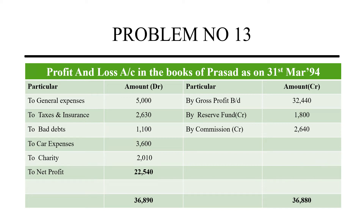And next one is charity — here I have mentioned it as $2,010. On the credit side, there is a gross profit from the trading account. And reserve fund — it's a very big topic, but in this question, reserve fund reflects both the balance sheet and the profit and loss account, even though it is given in the trial balance.